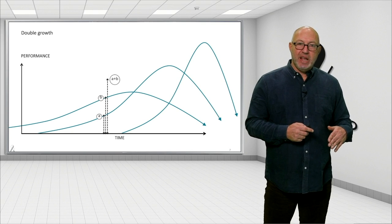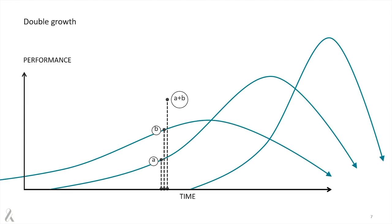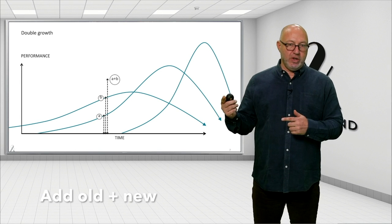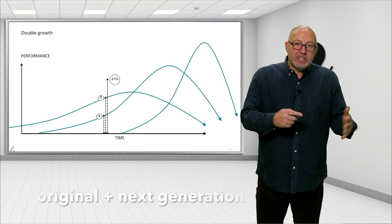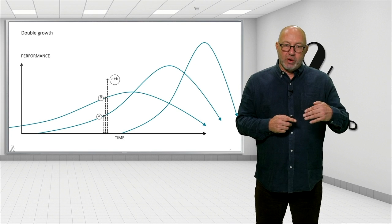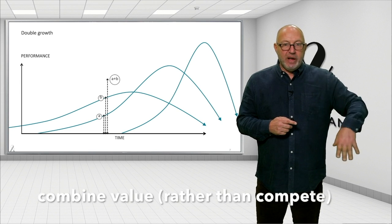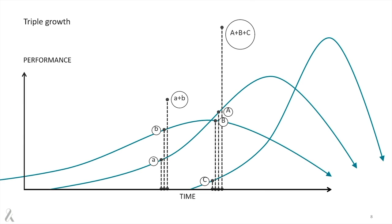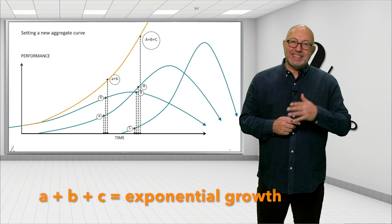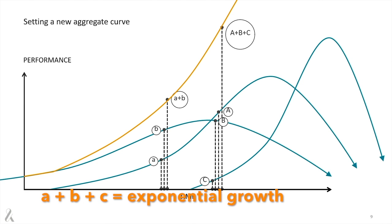But what would happen if you cannibalized your own offering? If you became your own innovation engine to replace your old technologies with new, your original offerings with the next generation, what you would be doing is creating a growth curve that combines the value of the first generation with the second, the value of those two with a third generation that ultimately, if you add those together, creates this kind of exponential curve.